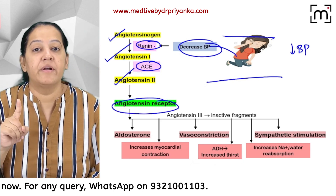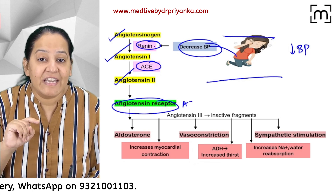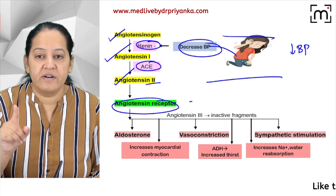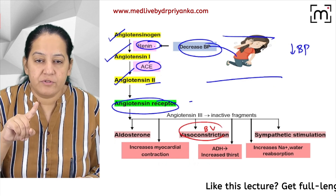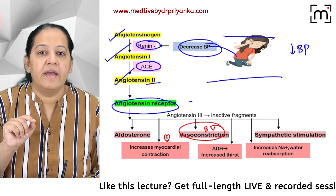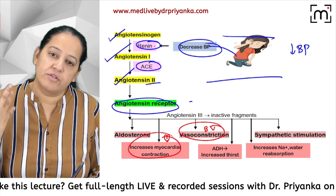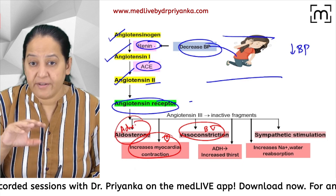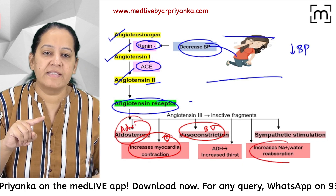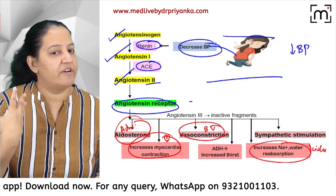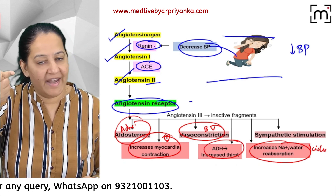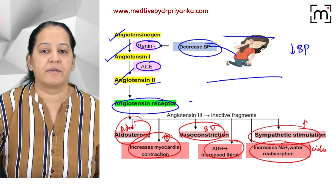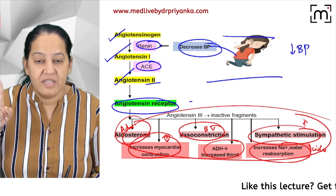Angiotensin 2 binds on the AT1 receptor, present on 6 organs. First: blood vessels — it causes vasoconstriction. Second: heart — it increases force and rate, raising blood pressure. Third: adrenal cortex — it secretes aldosterone, increasing BP. Fourth: kidney — it causes sodium and water retention, increasing BP. Fifth: brain — ADH secretion increases BP. Sixth: sympathetic nerves — sympathetic stimulation increases BP.